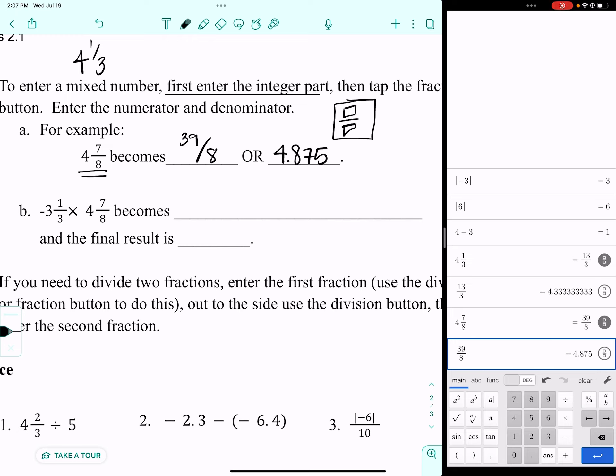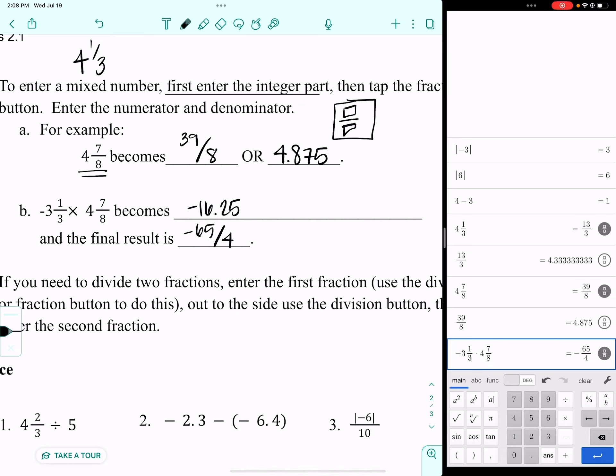If you need to multiply two mixed numbers, you can do that in here as well. I can enter my fraction right next to it, and then 4 and enter the 7 eighths right next to it. I end up with negative 16.25. If I want that as an improper fraction, I could also write it as negative 65 over 4.